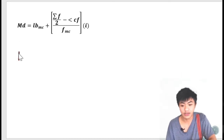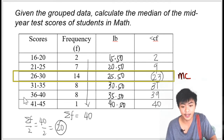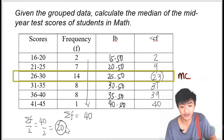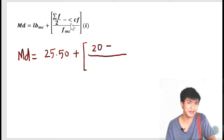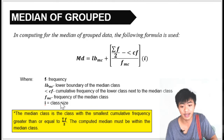So now we are ready to substitute into the formula. The median is equal to the lower boundary of the median class — tingnan mo sa median class, ang lower boundary dito is 25.50. Add it to: nasolve na natin yung summation of f over 2, which is 20. Minus the less cumulative frequency. But ano ba yung tinutukoy na less cumulative frequency sa formula? This is the cumulative frequency of the lower class next to the median class.